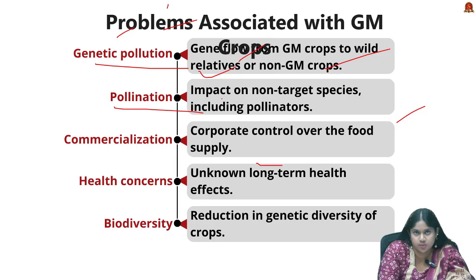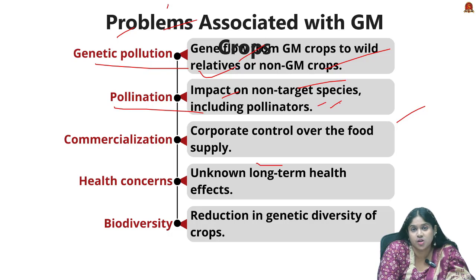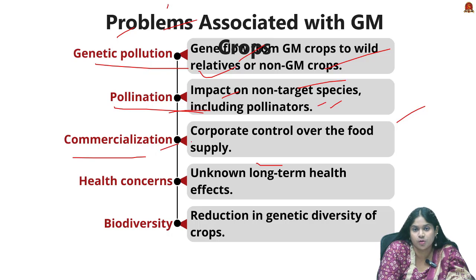Next is pollination — GM crops designed to be insect resistant can also affect non-target species, including beneficial insects like pollinators and pest-control predators. This disruption can lead to declines in important insect populations such as bees, which are crucial for pollination.